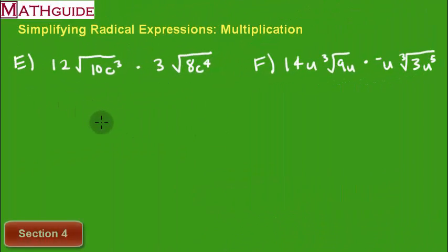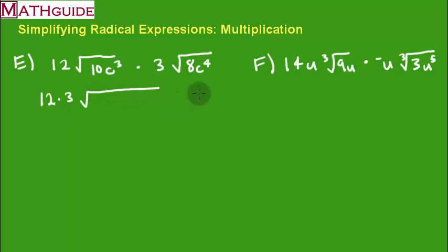I have some more complicated looking problems here. I'm going to continue my strategy from before. Let's multiply 12 times 3. So we're keeping our outside material times our outside. And now we're going to put our inside material together. So I have 10, 8, c cubed. That is a times sign, not a decimal. That's 10 times 8, c cubed, c to the fourth.